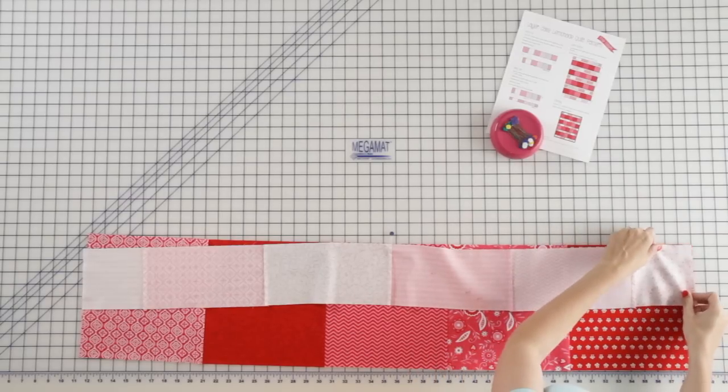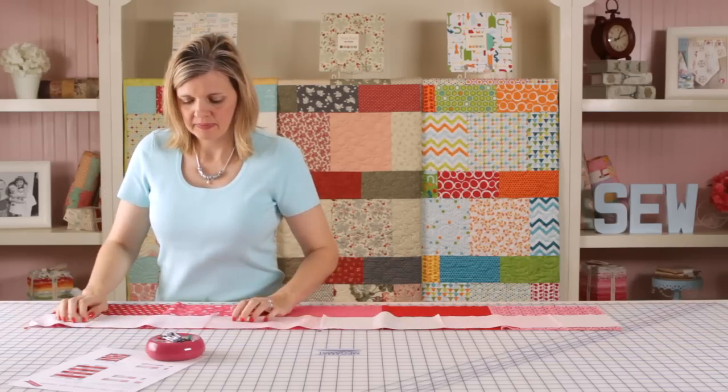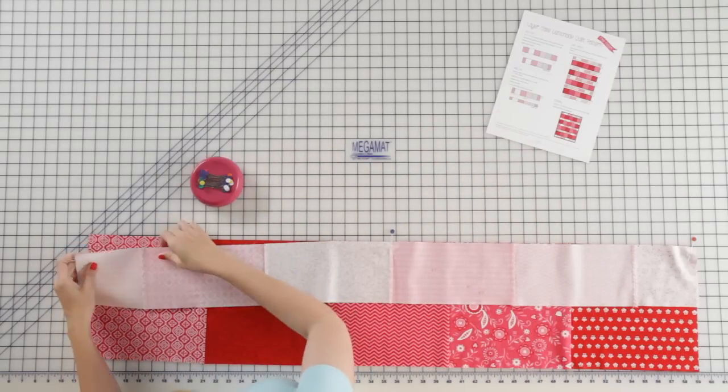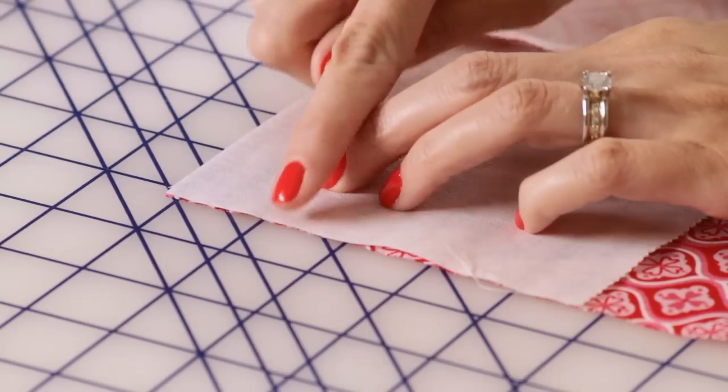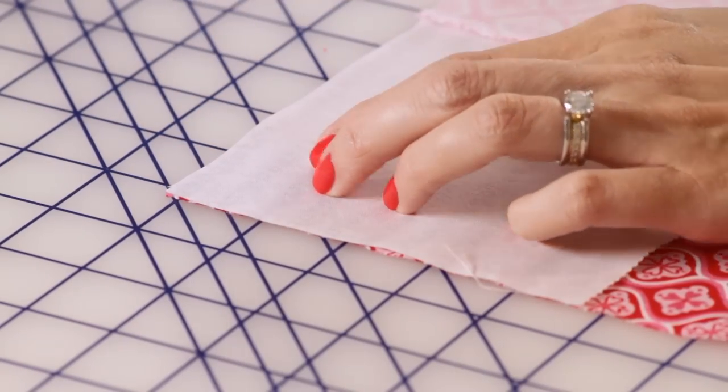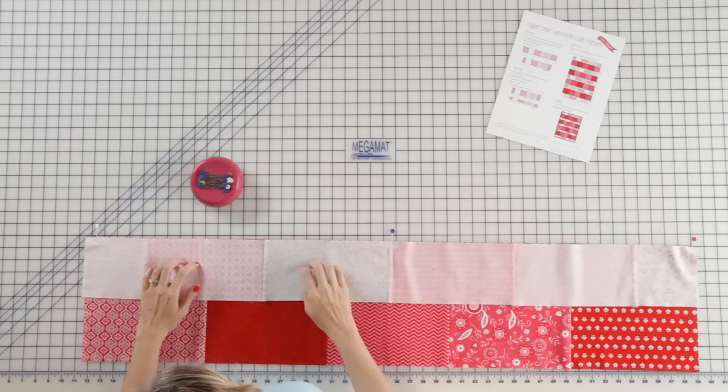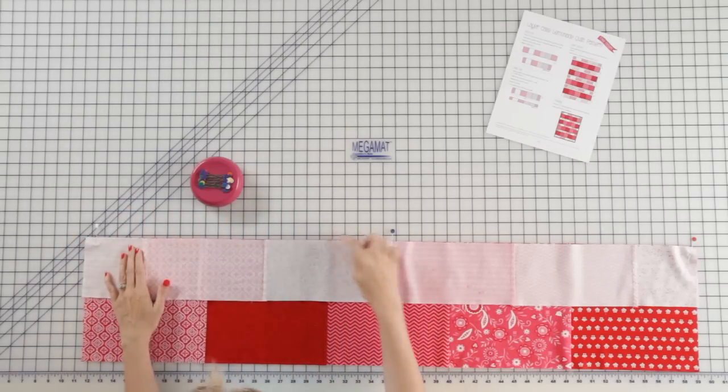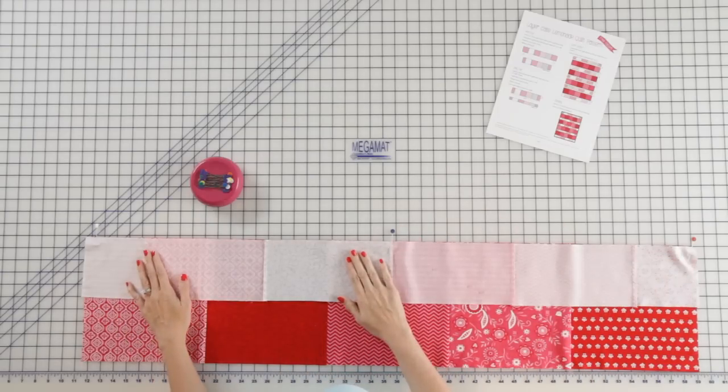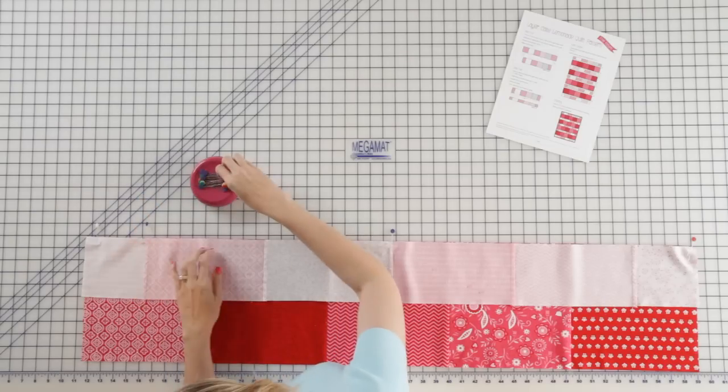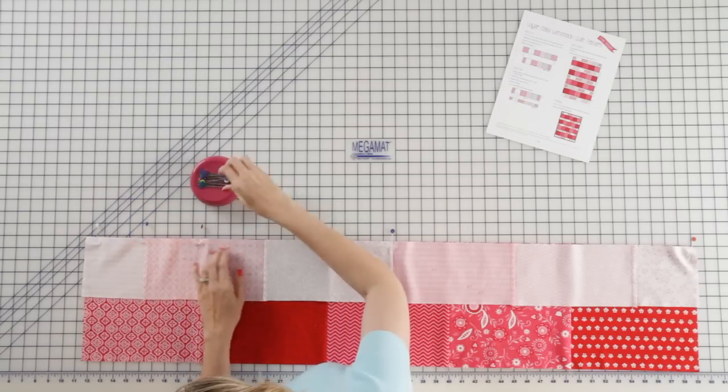And now we're going to pin on each end first. So you're going to pin on the right. Now you'll pin all the way on the left. And what you're doing is you're just lining up the edges. And then I just kind of fluff it a little bit and get all your edges lined up. And now I'm going to pin all the way down approximately every four inches.